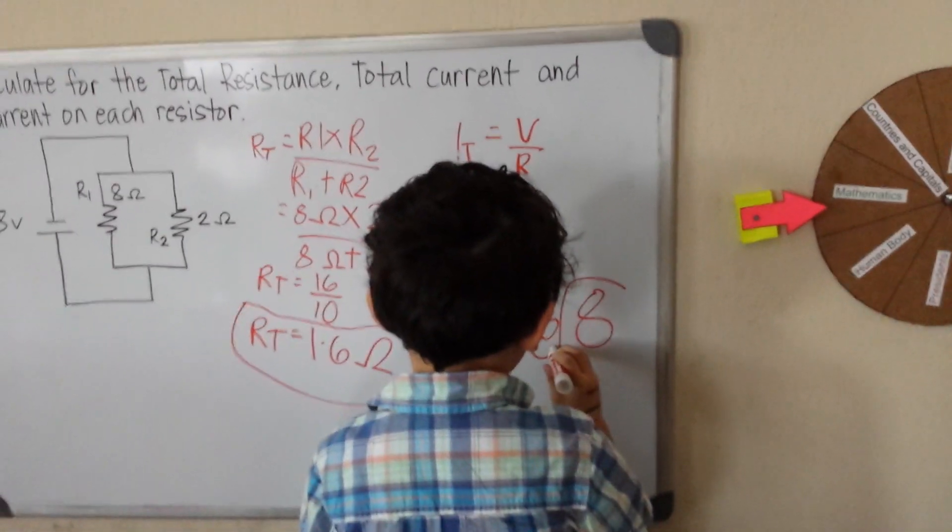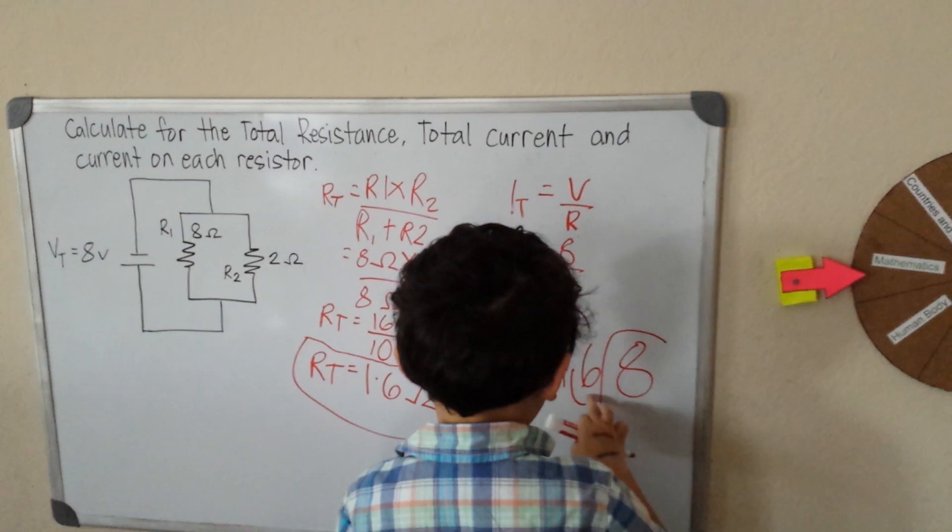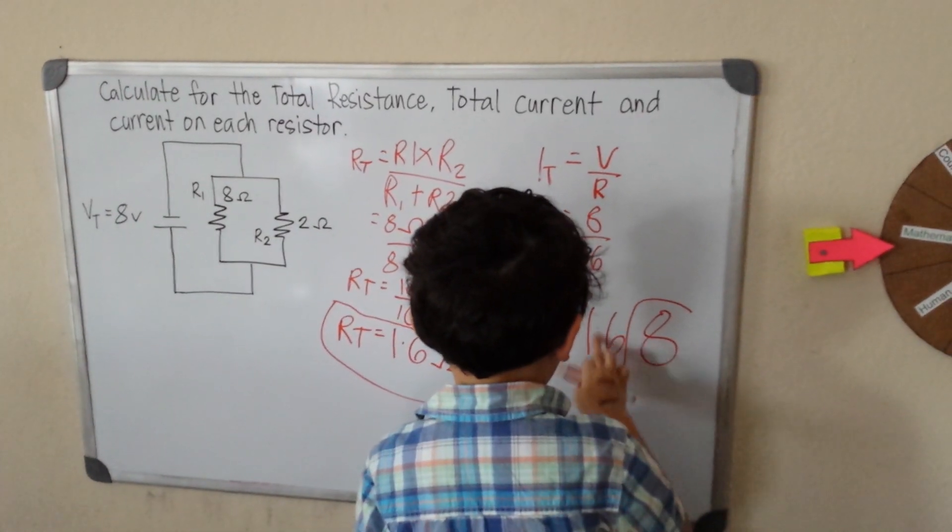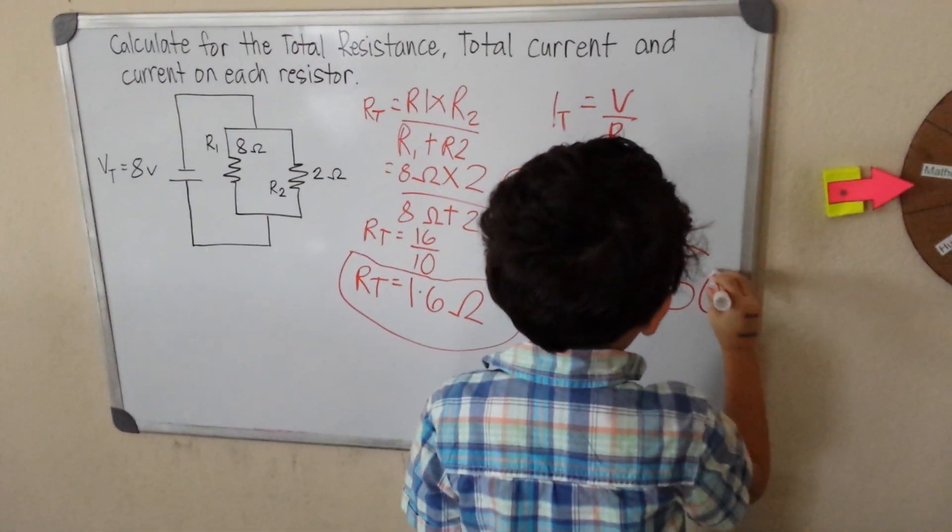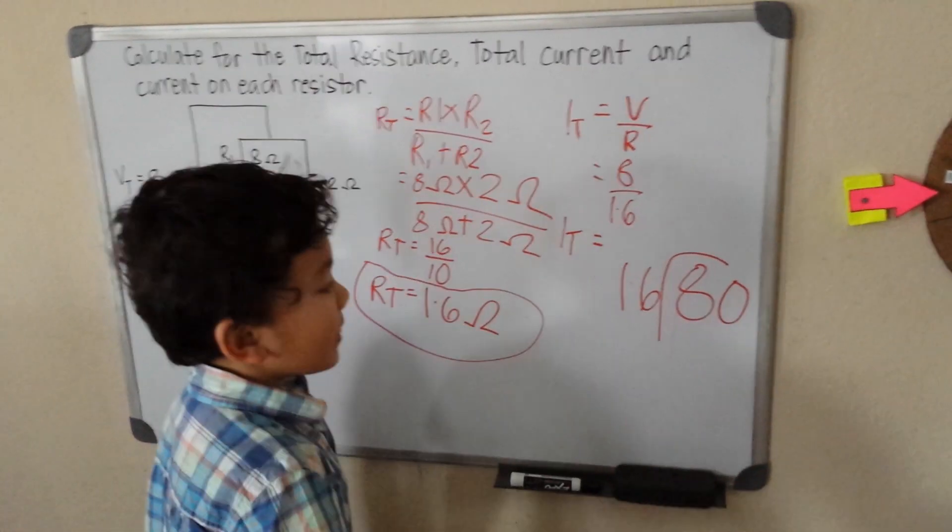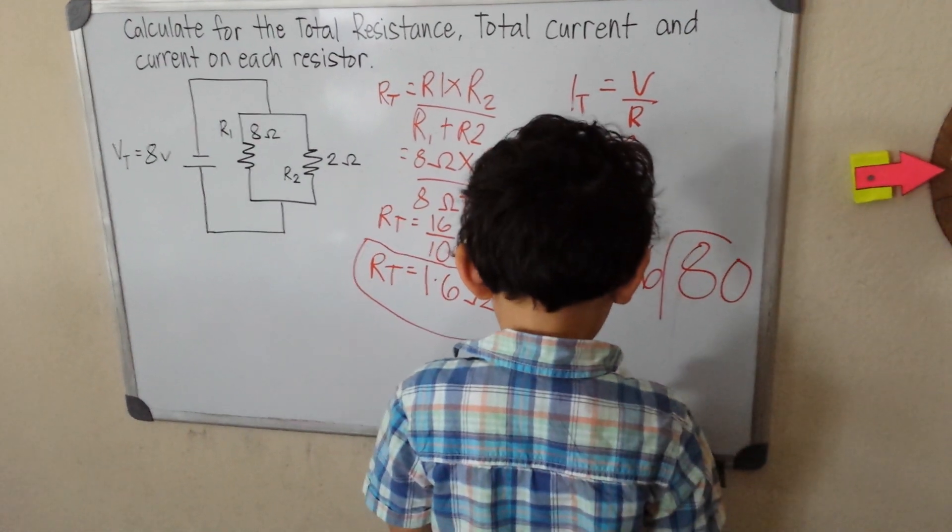So V is 8 divided by 1.6. Remember if you do this, this becomes a whole number. This is the big number, 16. After that you put a zero at the end. 80 divided by 16. Let's count easy.